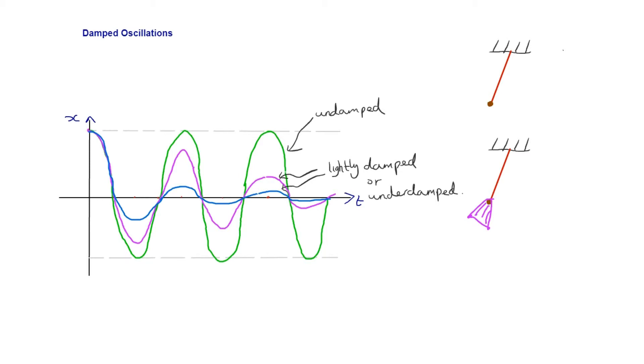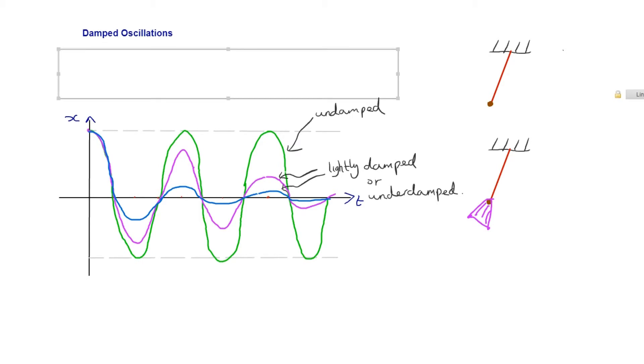So let's just get a definition here of damping. If an oscillator has to do work against frictional forces, then energy will be transferred away from the system. And so that's a key idea, and we're going to come back to energy in the next chapter. And of course, if energy is removed, then the amplitude is going to decrease.